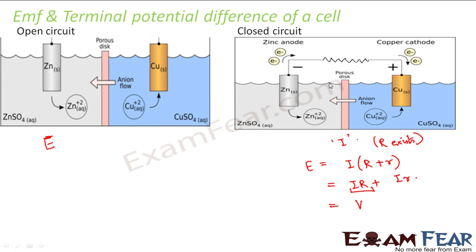Whenever a current flows through a circuit, that means there is a potential difference existing across that circuit. Since the current flows through the external circuit, there is a potential difference existing in that external circuit. This potential difference is known as the potential difference across the terminals of the cell — that is, the terminal potential difference. EMF is the potential difference between the electrodes of the cell, internal to the cell. Terminal potential difference is the potential difference between the terminals of the cell — the two end points through which it is connected to the external circuit.